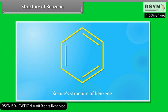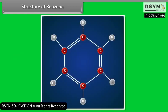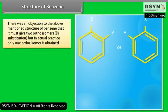Structure of benzene. A chemist, Kekulé, in 1865 suggested the following structure for benzene. According to Kekulé, the 6 carbon atoms in benzene are on the 6 corners of a regular hexagon. Each carbon atom is attached with one hydrogen atom. There are 3 alternating double bonds between carbon atoms to complete the fourth valency of carbon.